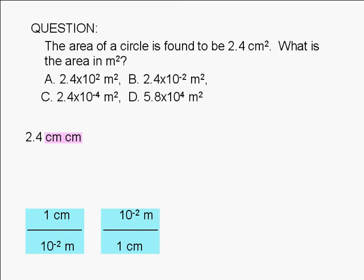Since we want to replace centimeter by meter, we use the conversion factor that will allow us to cancel centimeter. Therefore, we use this conversion factor. We multiply our known amount by 10 to the negative 2 meter over 1 centimeter. This cancels out one of the centimeter units.